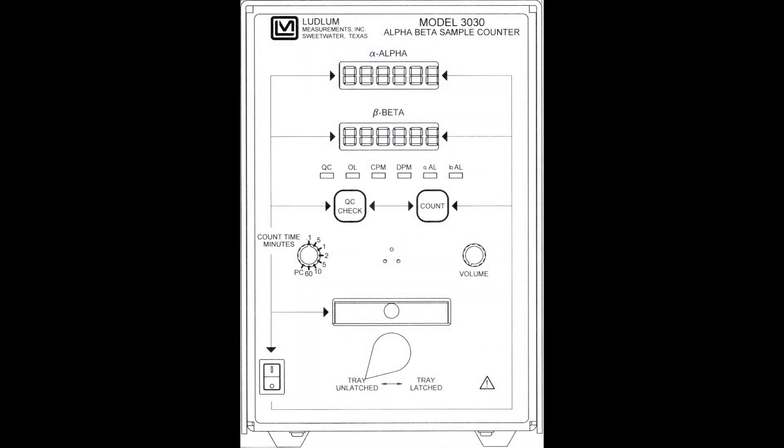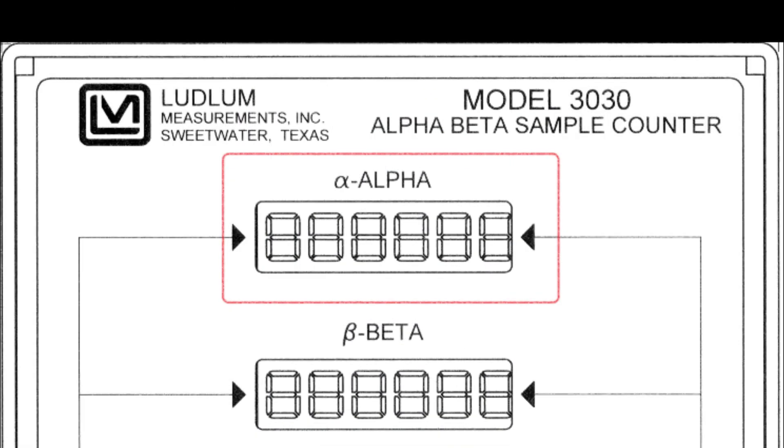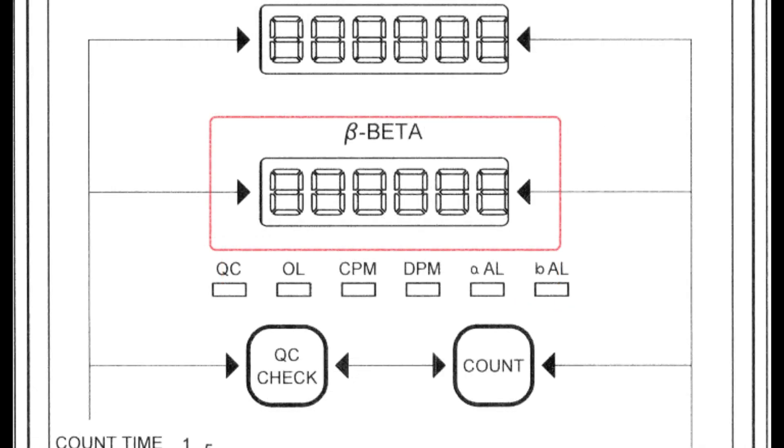The front panel controls and displays are an alpha channel display that is a six digit backlit LCD readout which indicates counts received in the alpha counting channel. A beta channel display that is a six digit backlit LCD readout which indicates counts received in the beta counting channel.